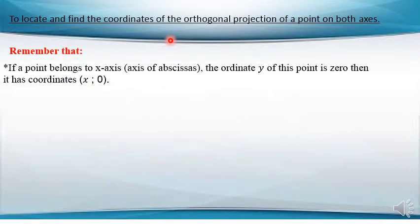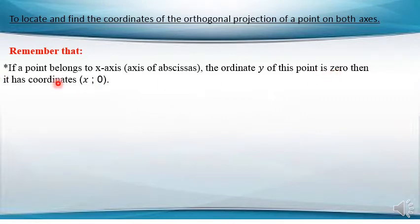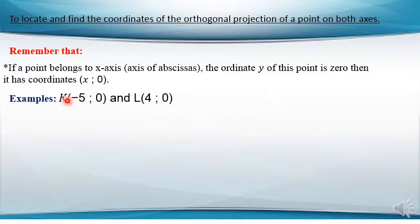Before we start, let's remember what we already took. We already said that if a point belongs to the x-axis, or the axis of abscissa, then the y-coordinate of this point is 0. For example, K(-5, 0) and L(4, 0) — these two points belong to the x-axis and their y-coordinates are 0.